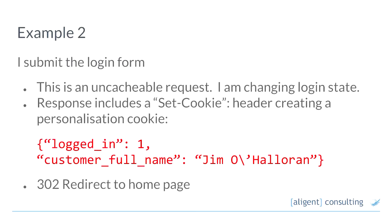As I continue to browse around the site, maybe I click on the login link and go to login. When I post the login form, the server is going to have to modify my state on the back end to know that I've logged in. Because it's modifying state, this is not something we can cache. Our personalisation code intercepts the response to this and adds a cookie that includes a little snippet of JSON indicating Jim's now logged in and this is his name. Magento has an unusual behaviour — when you log in, it will usually 302 redirect you to the home page.